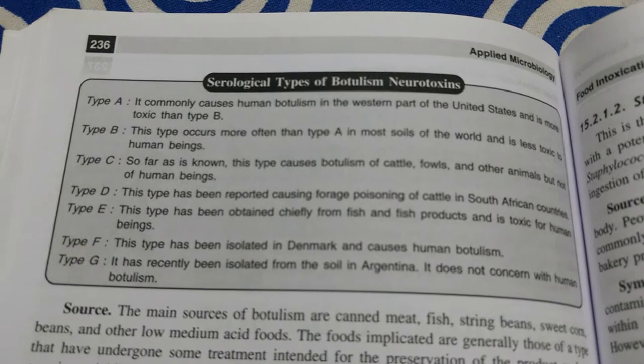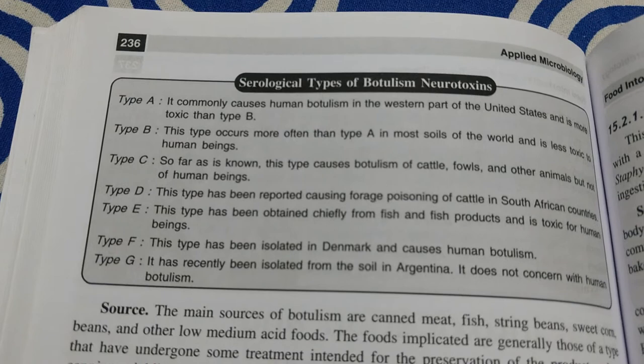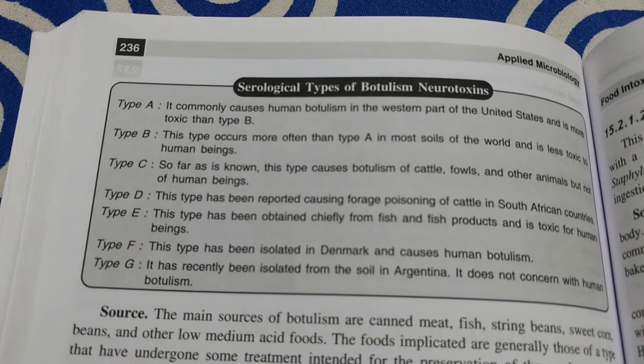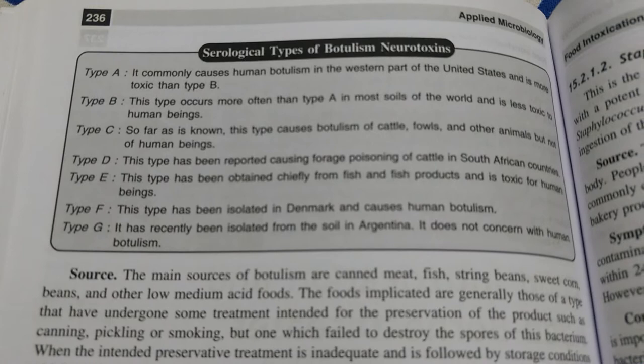Type D has been reported causing forage poisoning of cattle in South African countries. Type E has been obtained chiefly from fish and fish products and is toxic for human beings. Type F has been isolated in Denmark and causes human botulism. Type G has recently been isolated from soils in Argentina and does not concern human botulism.